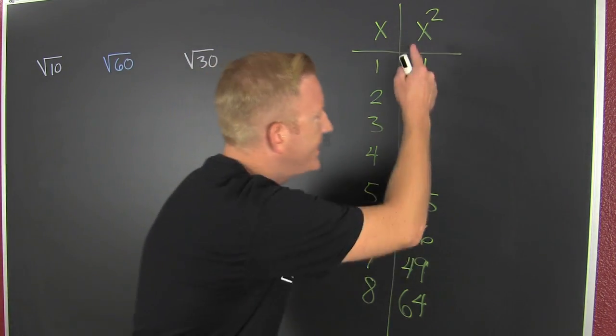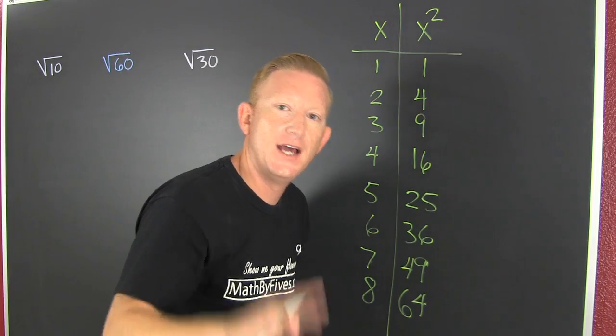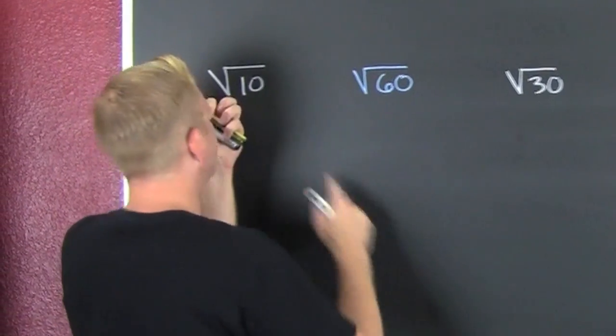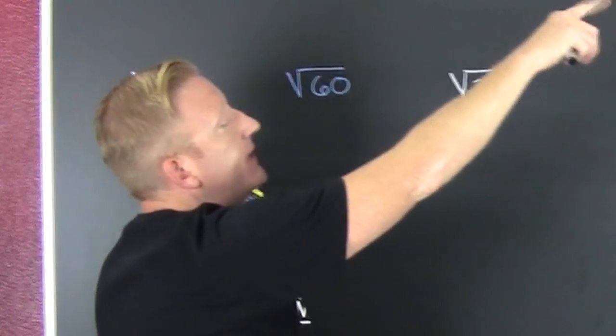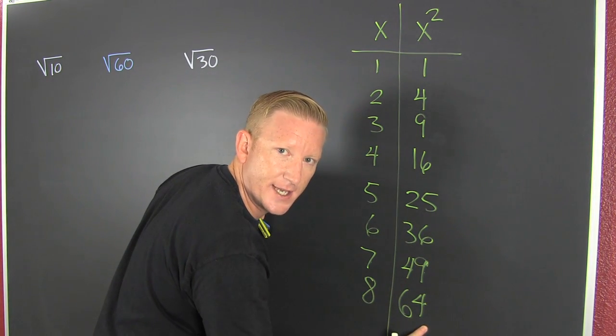What are we gonna do? Go on this side and look back that way. Look back at it. What do I have? I have the square root of 10. So I need to look at the square. All right. Which one of these is close to 10?